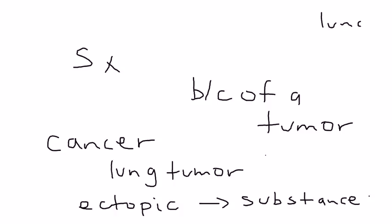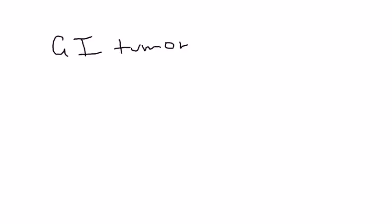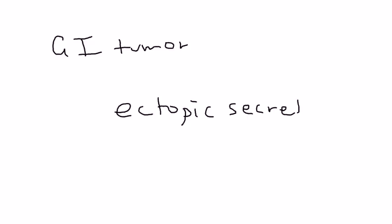Lung cancer, renal cancer, gastric cancers — a long list of cancers. So I'll give you one scenario. Let's say somebody has a GI tumor. This GI tumor will result in an ectopic secretion of a substance. GI tumors commonly secrete an ectopic secretion of VIP.